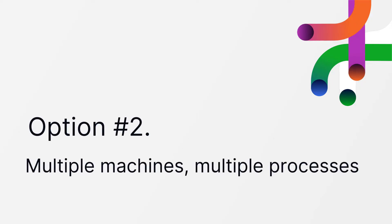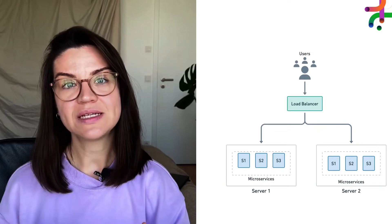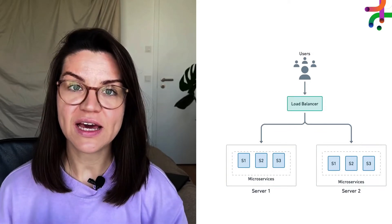Option number two: multiple machines and processes. This option is essentially an upgrade of option number one. When the application exceeds the capacity of a server, we can scale up by upgrading the server, or scale sideways by adding more servers. In the case of microservices, horizontal scaling into two or more machines makes more sense because we get improved availability as a bonus. This option is excellent if you have a few spare machines and want to improve availability, as long as you keep things simple with services that are more or less uniform — the same language, the same frameworks.